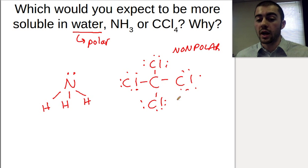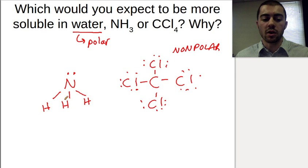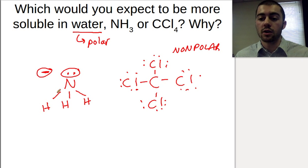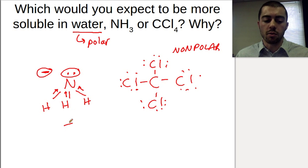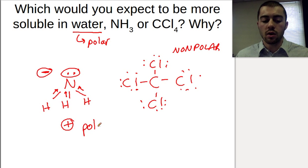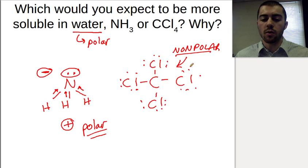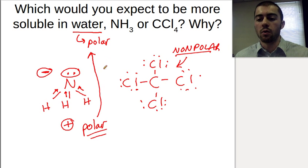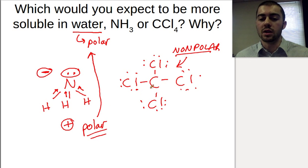CCl4 is not going to be soluble very well in water. NH3 has a lone pair up here, creating a negative end of the molecule. Nitrogen being more electronegative than hydrogen pulls electrons towards itself, creating a positive end of the molecule at the bottom. NH3 is a polar substance. So comparing them: CCl4 is nonpolar — not going to dissolve well in water. NH3 is polar — it will dissolve well in water because they have similar intermolecular forces and will blend in a lot better.